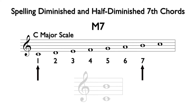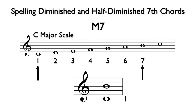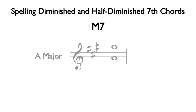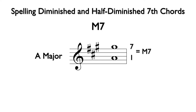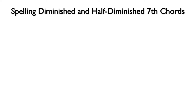In the key of C, C is the first note and B is the 7th note — therefore, this is a major 7th. In the key of A, A is the first note and G sharp is the 7th note — therefore, this is a major 7th. The second method I recommend is interval inversion.